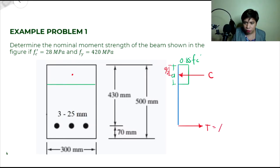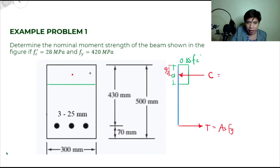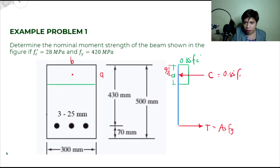Take note: yung formula ng tension force dito is AS — that is area ng steel — multiplied by F sub Y. And yung ating compression force dito is yung stress multiplied by the area, itong compression area natin, which is A multiplied by B. So this is 0.85 F sub C prime multiplied by A multiplied by B.